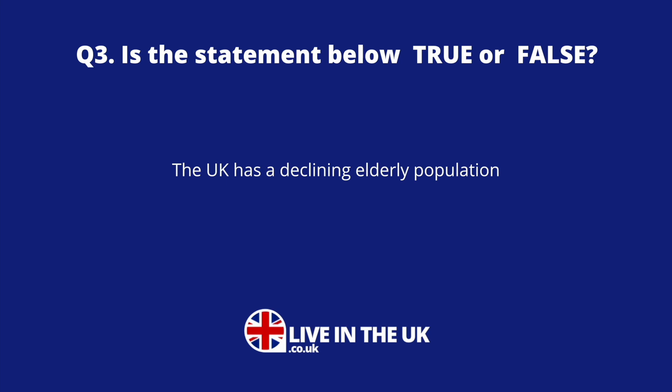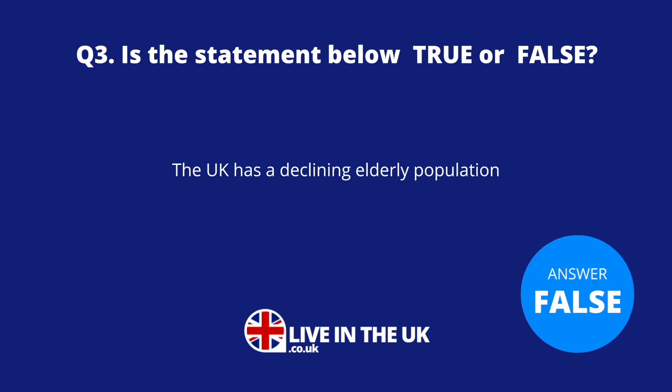Question three: Is the statement below true or false? The UK has a declining elderly population. That's false. The UK actually has a large and growing elderly population. It's going to be a big issue going forward, because if the elderly population grows too large and outstrips the number of young people to look after them, that becomes a significant problem.